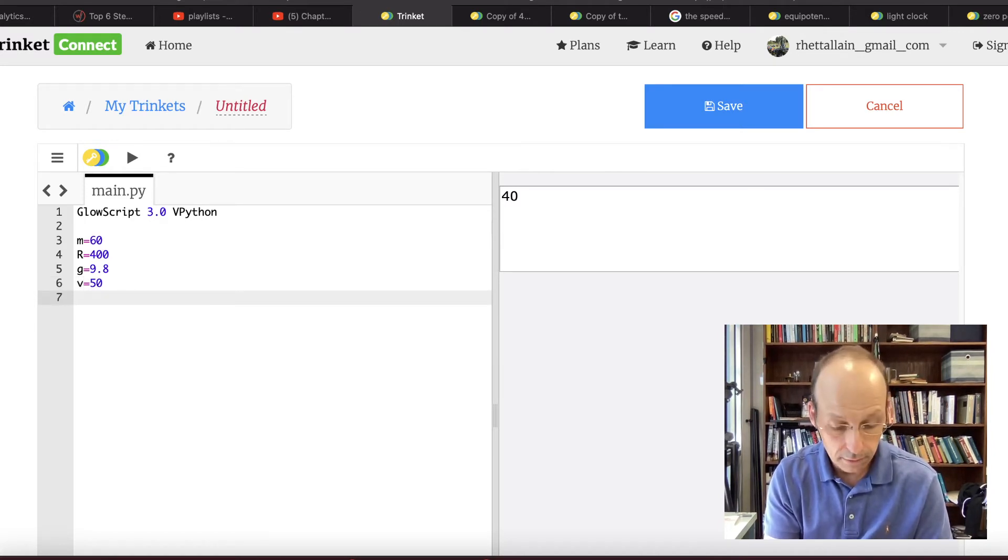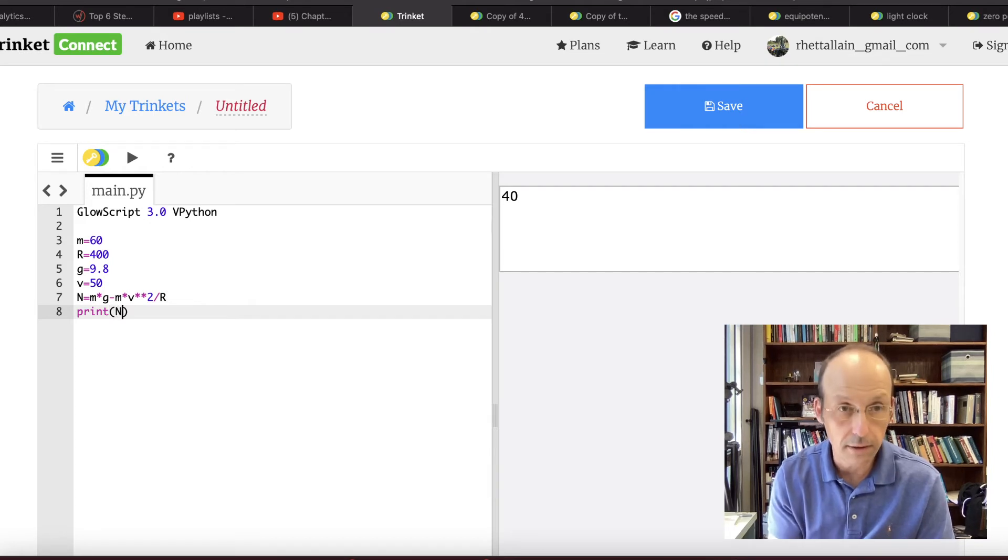So I get, let's just solve for it. n equals, I'm just going to type my equation, m times g minus m times v squared over r. Print n. 213 newtons.